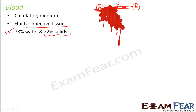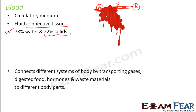Blood, being a fluid, connects different systems of the body by transporting gases, digested food, hormones, and waste materials to different body parts. Gases breathed in or out need to be transported between body parts; digested food from the stomach and intestine must reach other parts; and hormones released by specific glands are also transported by blood to the cells that need them.